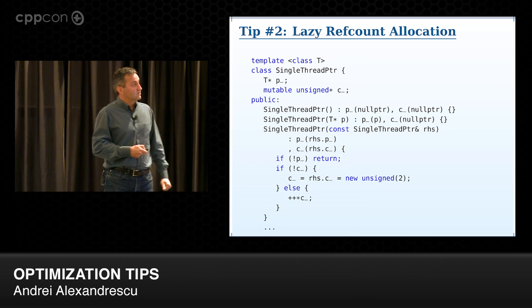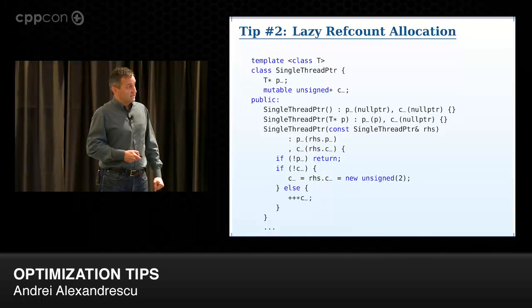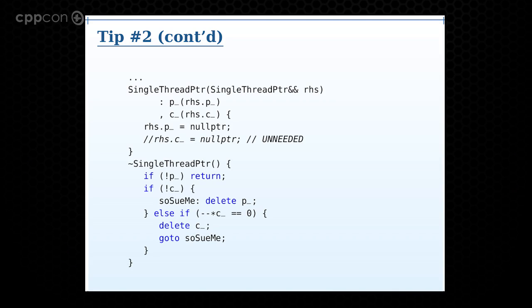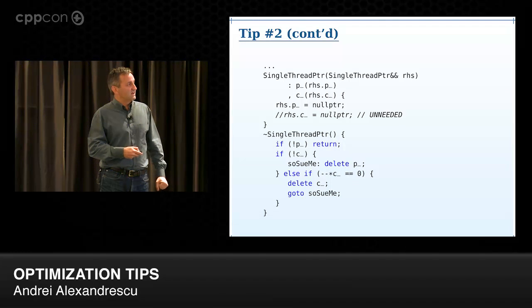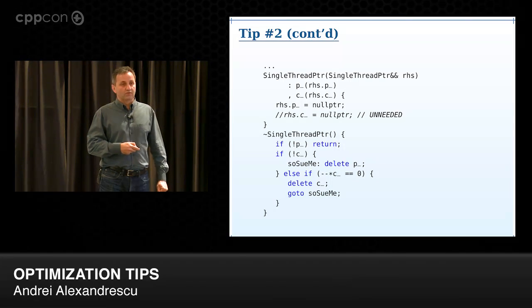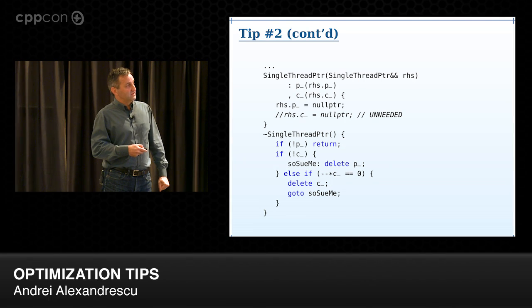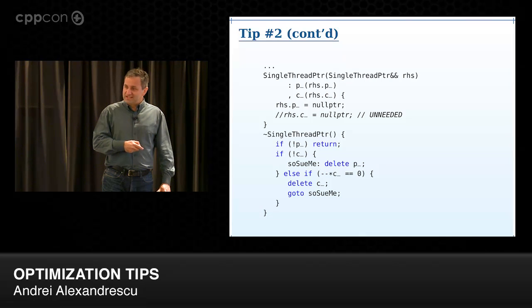Tip three: skip the last decrement. When the counter reaches 1, you know you're done — don't write to it again, because indirect writes are expensive. Instead of 'if (--c == 0)', check 'if (*c == 1)' — then you're done without touching it. The worst thing in computing are indirect writes. You never want to write indirectly if you can avoid it.